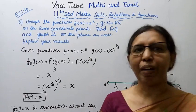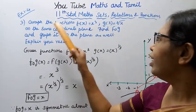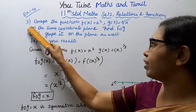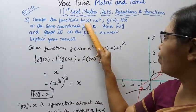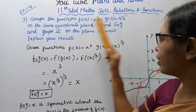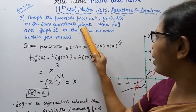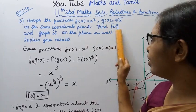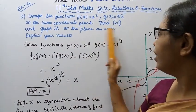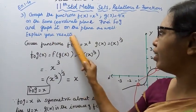Hello students, welcome to Max and Tumble channel, 11th standard maths sets, relations and functions, exercise 1.4, third sum. Graph the functions f(x) = x³, g(x) = ∛x on the same coordinate plane. Find f∘g and graph it on the plane as well. Explain your results.